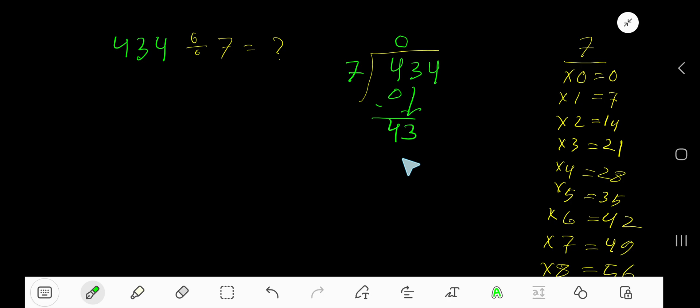7 goes into 43 how many times? Look, 7 goes into 43... 7 times 49, that's too much for 43. 6 times. 6 times 7 is 42.